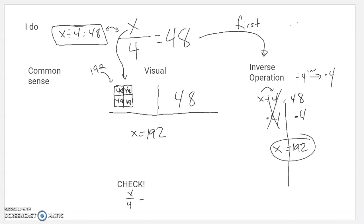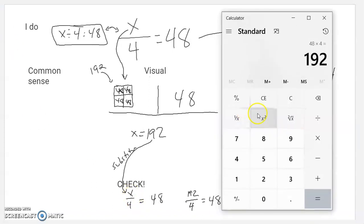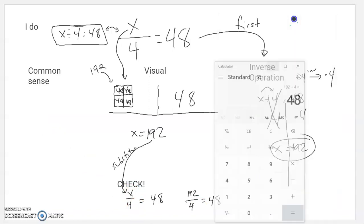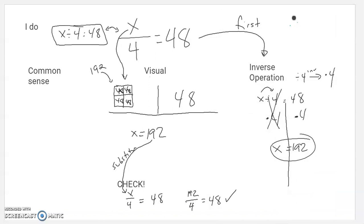X divided by 4 equals 48. I need to make sure that if I substitute 192 in, it works. I get the same thing, so 192 divided by 4 should equal 48. I'll double check and make sure that's true. 192 divided by 4 is indeed 48, which means I'm right. You can always know if you're right on these, which is nice if you go back and check. You'll never have to wonder.